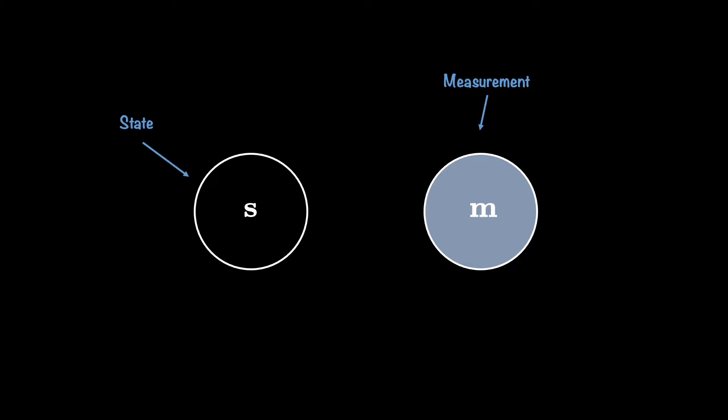The next thing to wonder about is the relationship between these two random variables: the observed one, M, and the unobserved one, S. One simple example of a relationship could be that the measurement M is a distorted reflection of the state variable. I say reflection because the sensors we use to measure physical phenomena are not always capturing it accurately, and this equation relating the two may quantify that potential relationship. The actual relationship could be way more sophisticated, and it also depends on what you are modeling.